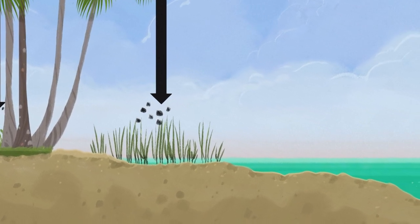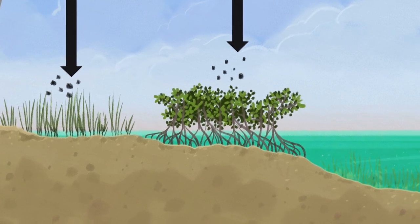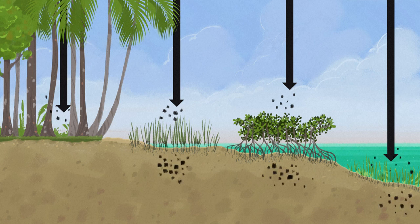For the same area, they retain 3-5 times more carbon than a tropical rainforest because they store large amounts in the sediments and their roots and rhizomes, and not only in the plants at the surface.